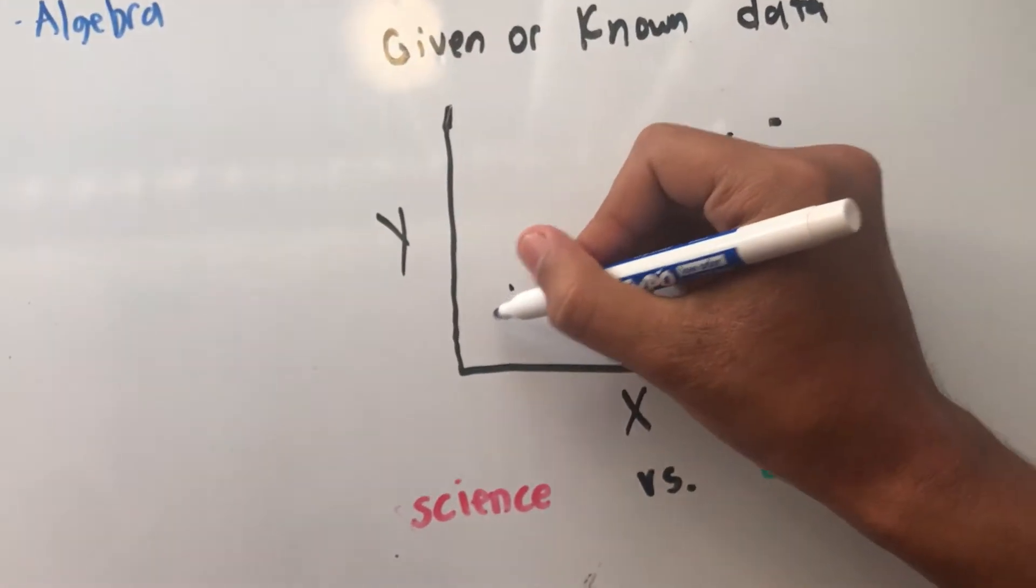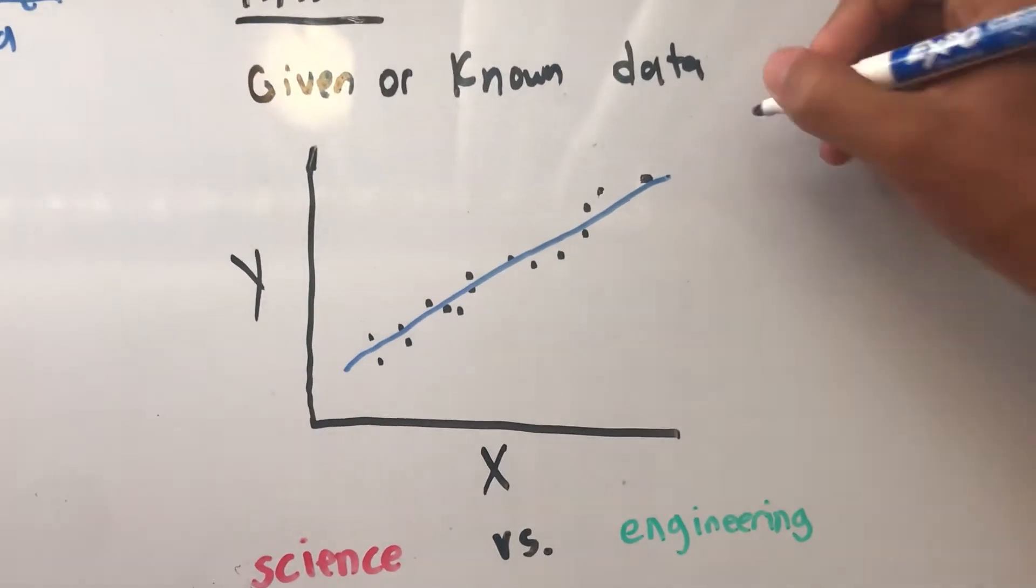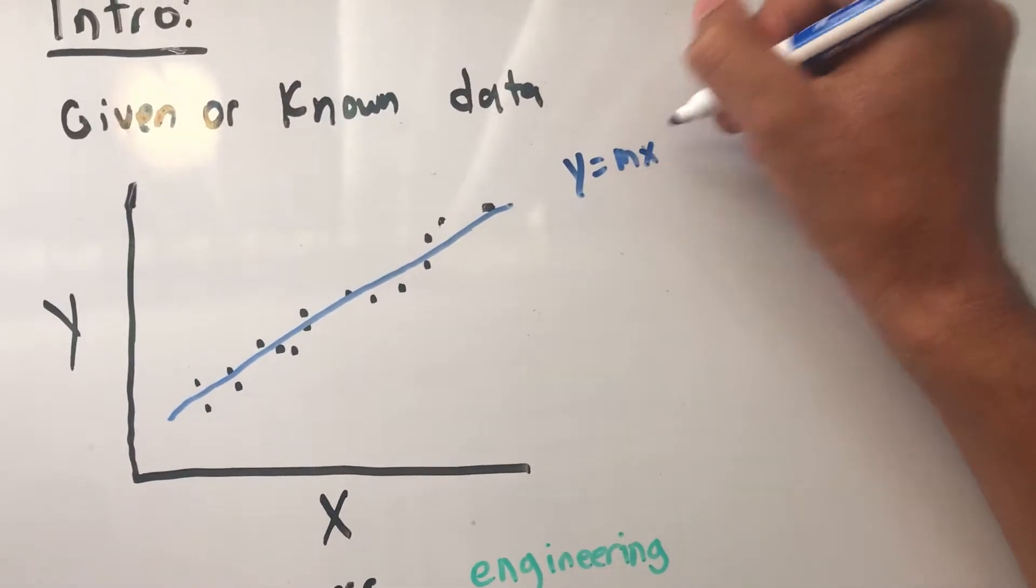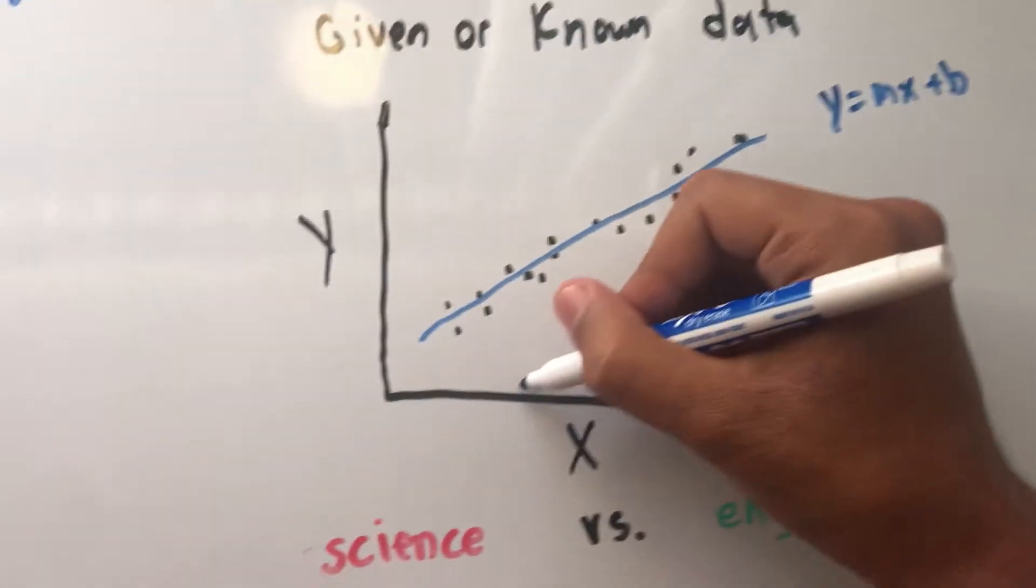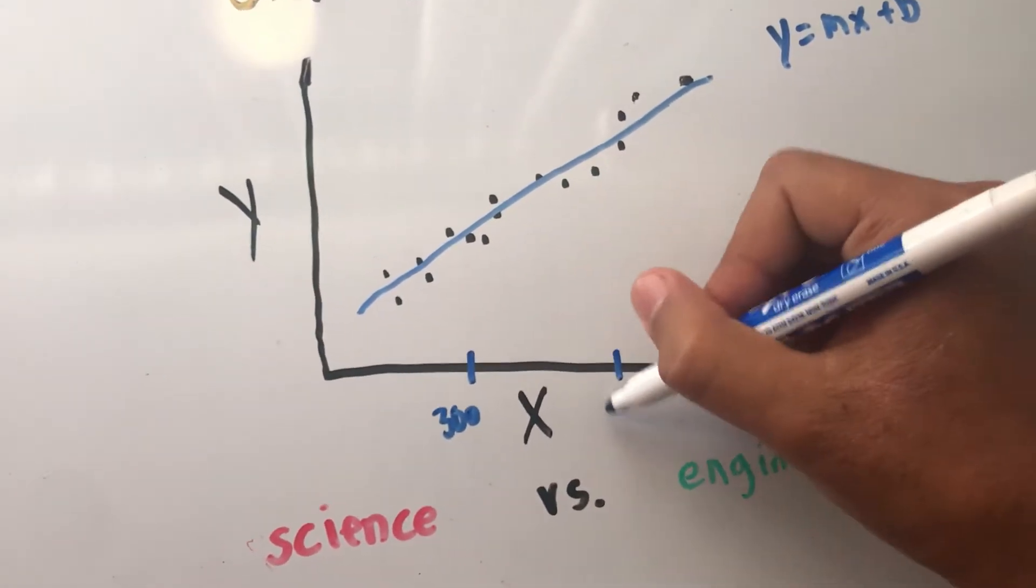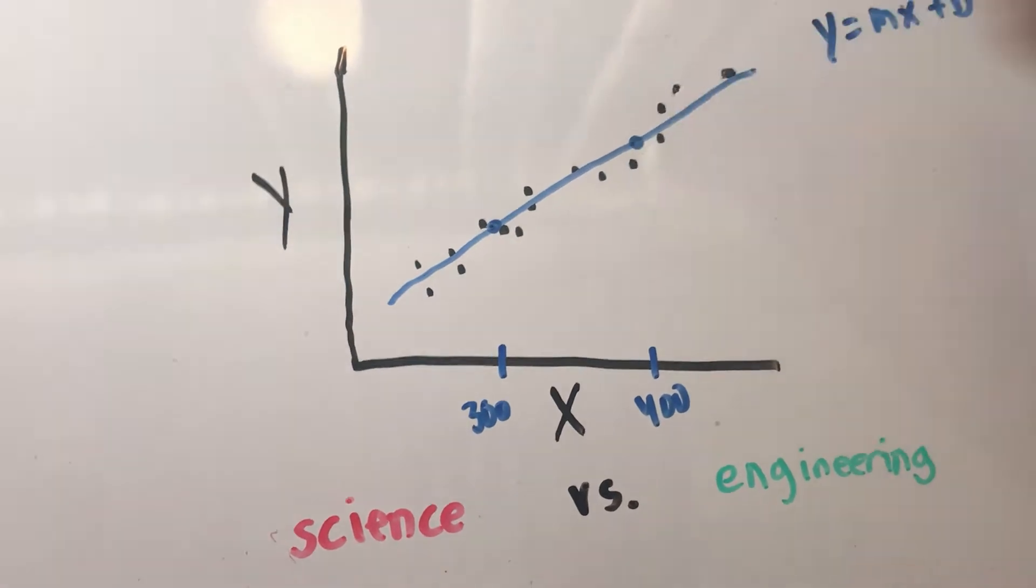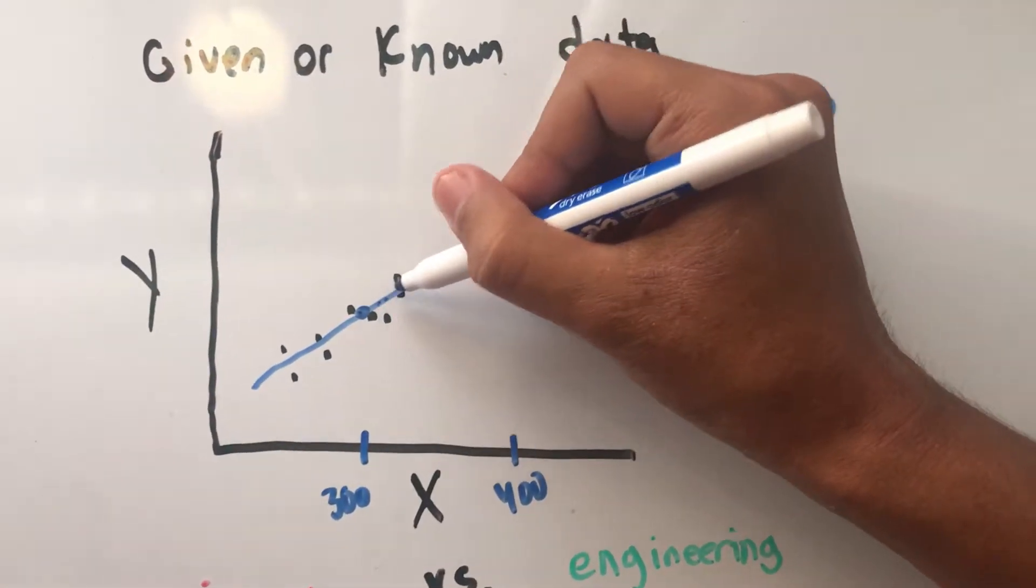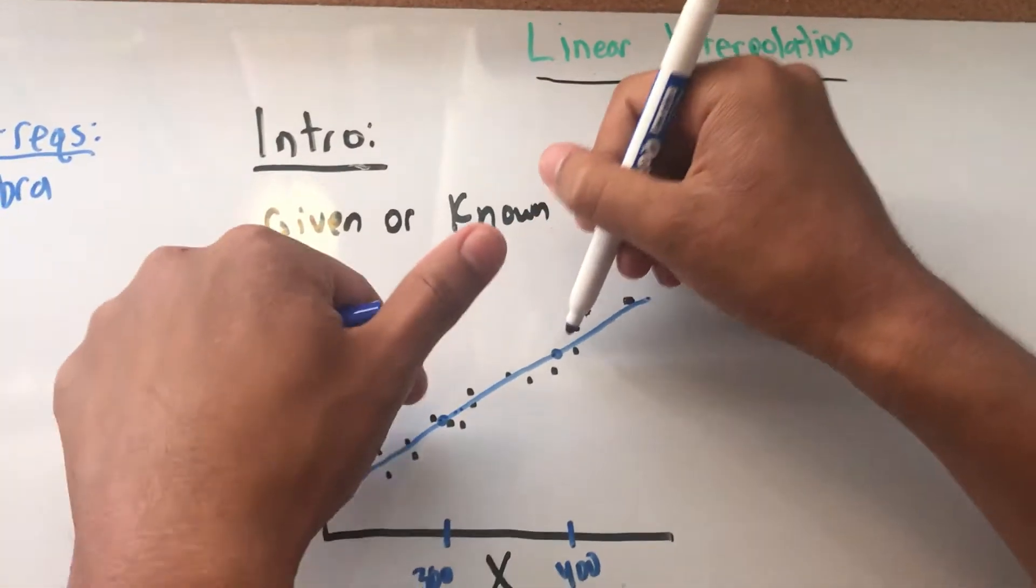As you saw, these are the different correlations. If I make a relationship as such, I can make a nice line kind of like that. So we have y equals mx plus b. Now if I have this, let's say this is 300 and this is 400. Using the slope, I can solve for it at anything in between.